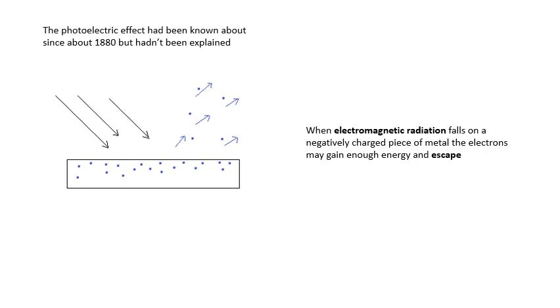So what is it? Well, the photoelectric effect had been known about since 1880, but it hadn't been explained. Basically, if you have a negatively charged piece of metal, and when some kind of radiation falls on it, for example light, then maybe the electrons escape and it loses its negative charge. Perhaps. When electromagnetic radiation falls on a negatively charged piece of metal, the electrons may gain enough energy and escape from the metal. So it loses its charge. We're not talking orbital electrons here. We're talking free electrons. So we're not ionizing the atoms or anything. It's just free electrons escaping from the surface of the metal.